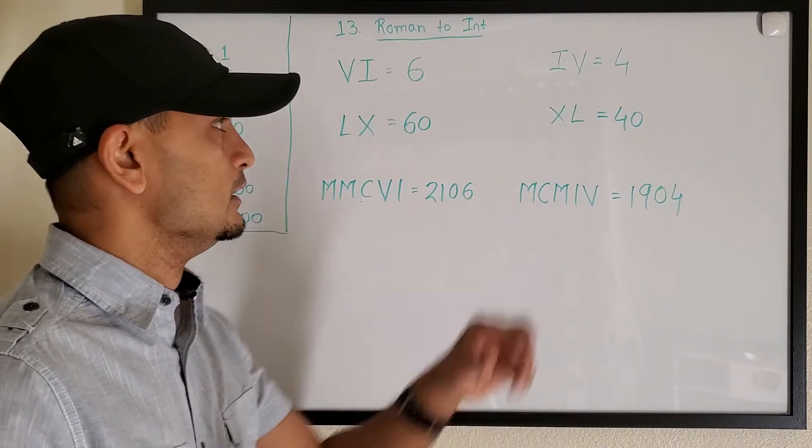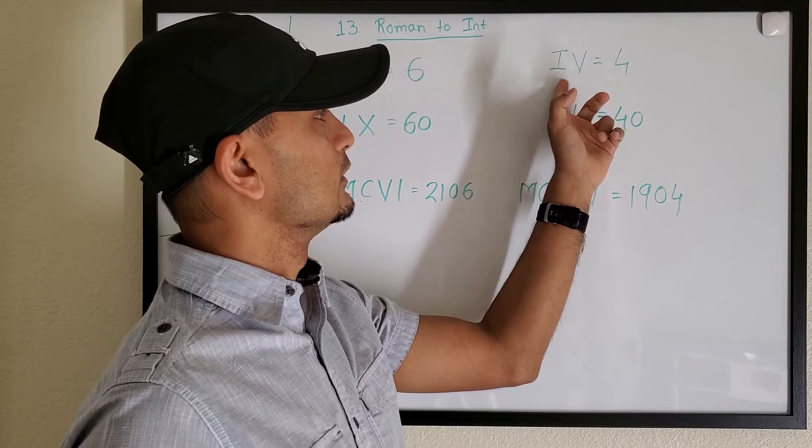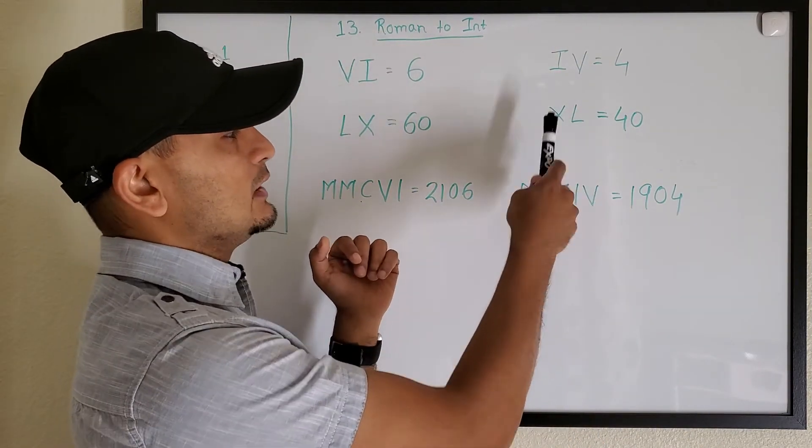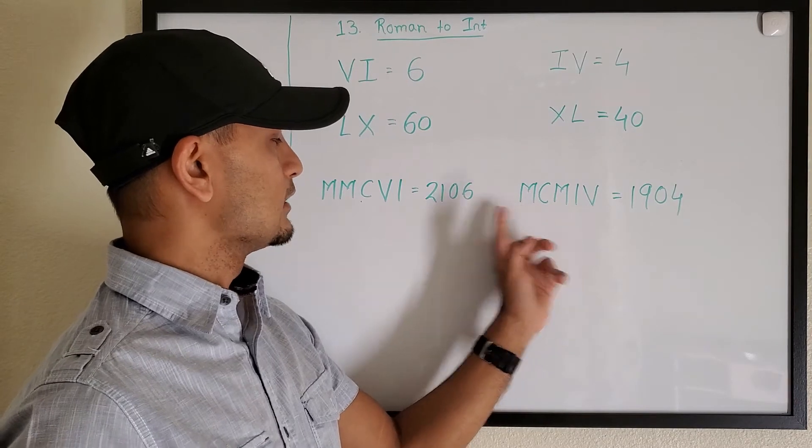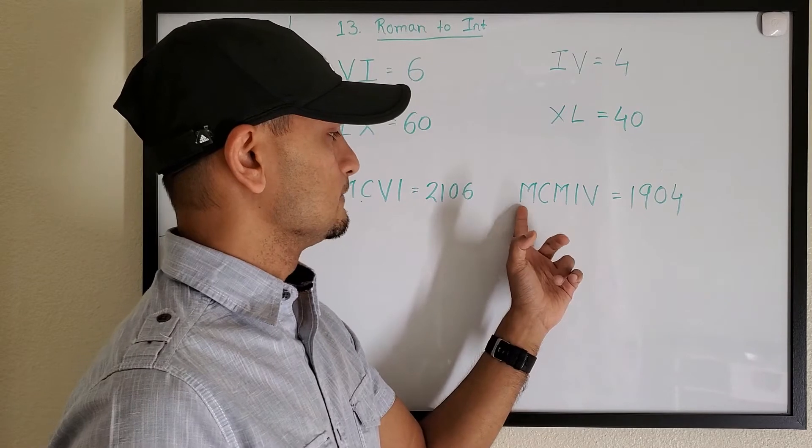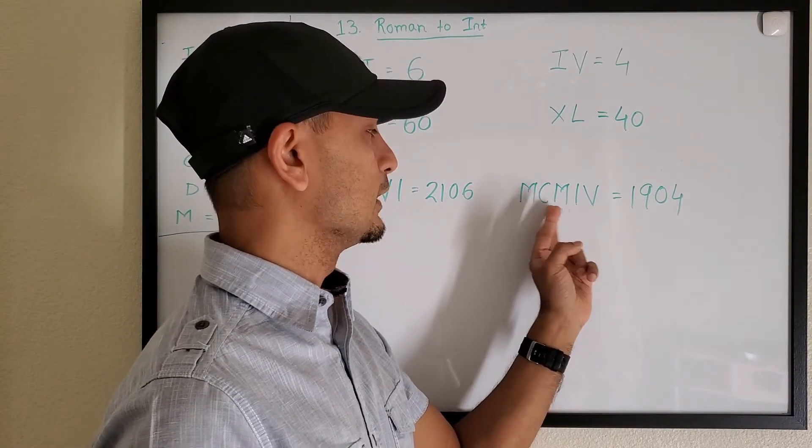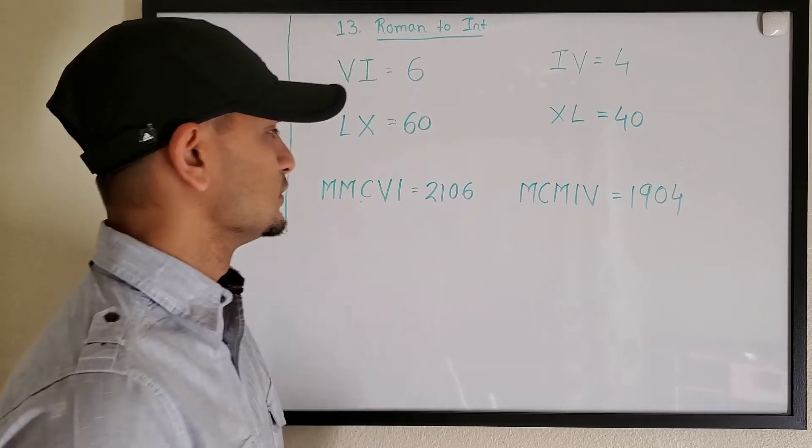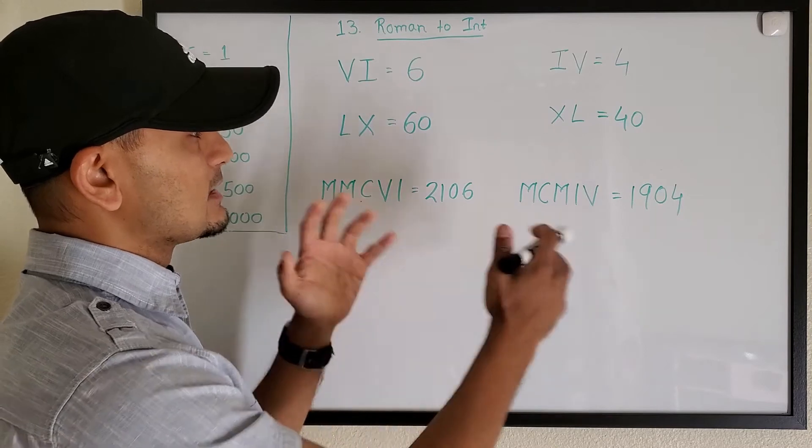Now some of the other or different pattern is IV, so we know this is 5 minus 1 equals 4. Now XL, so L is 50, X is 10, so 50 minus 10 is 40. And then MCMIV - you'll notice that we're using the same letters but in different order. So M is 1000, CM - so C is 100 and this is 1000, so this becomes 900, thousand minus 100 so 1900, and this is 4, so 1904.